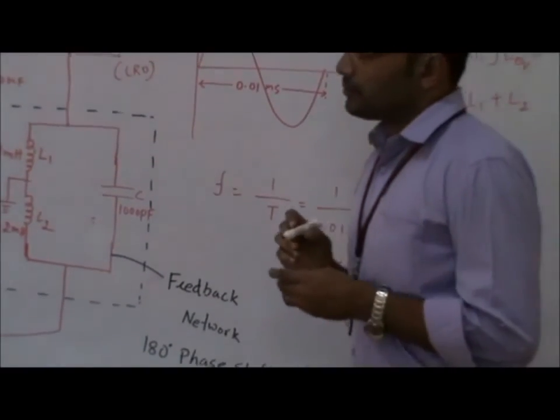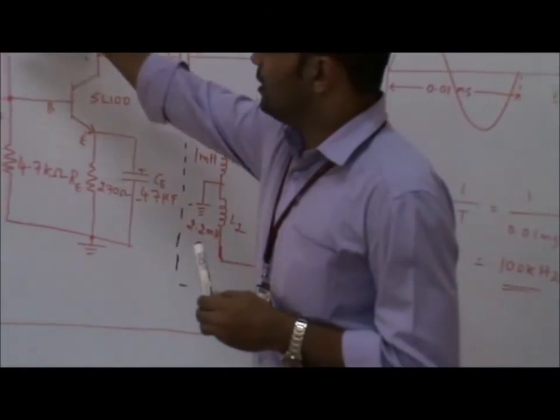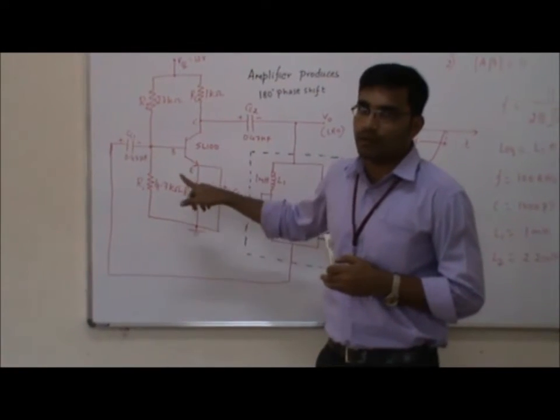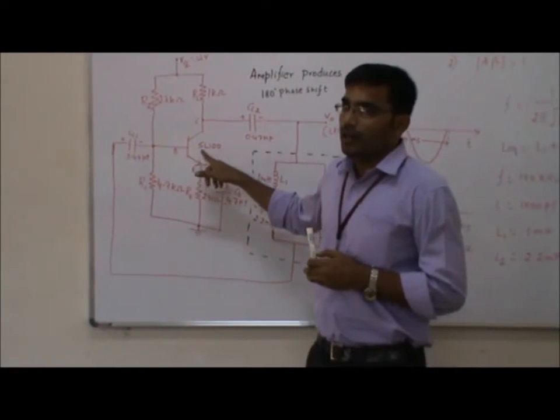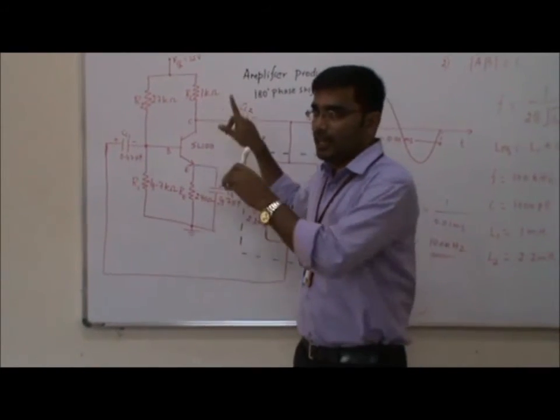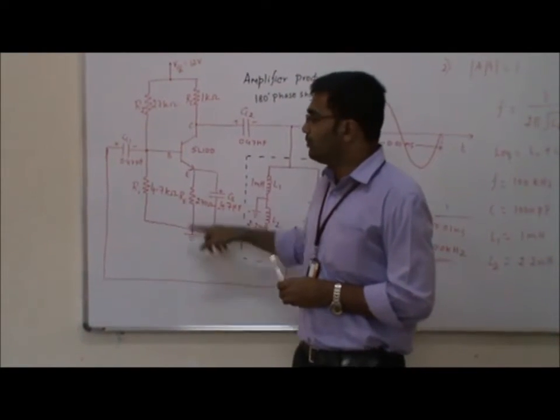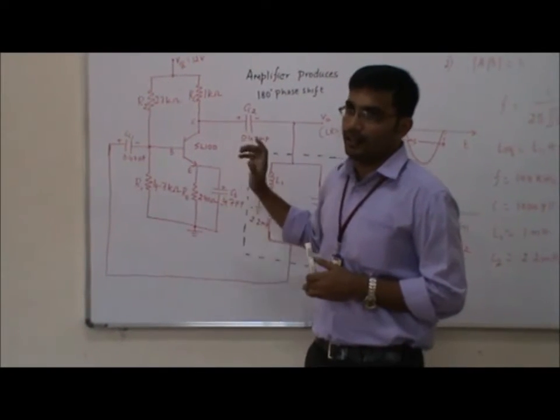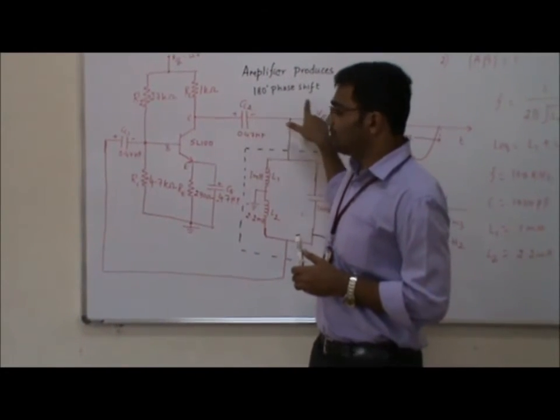The circuit uses a voltage divider bias network which produces a 180-degree phase shift. This is basically an amplifier circuit made up of R1, R2, RC, RE, and a transistor SL100. The amplifier produces a 180-degree phase shift.